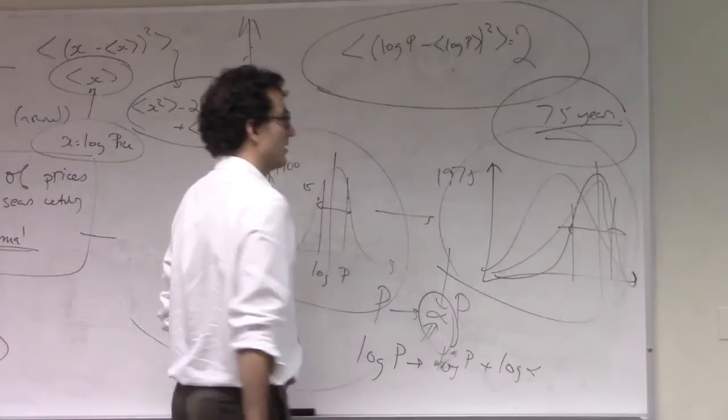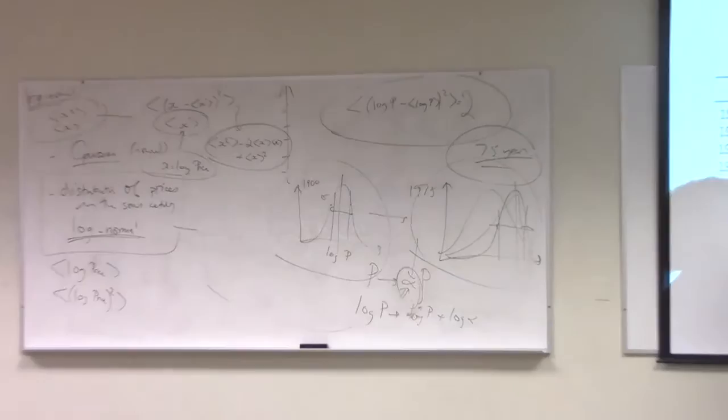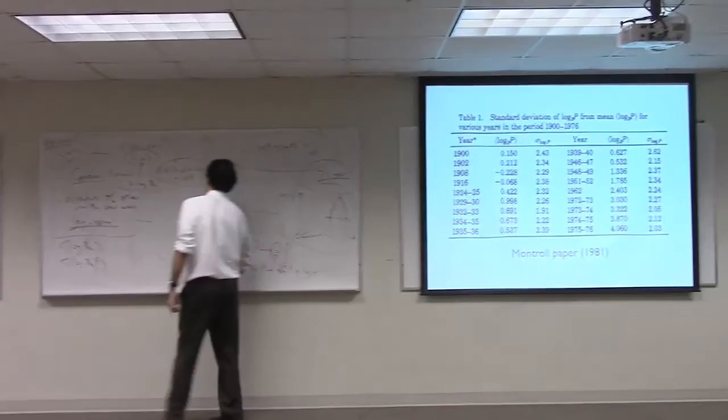But what we find is in the data, the deviations, the squared deviations from the mean in log space stay constant. That's against the expectations that we have, and the problem is to explain it.